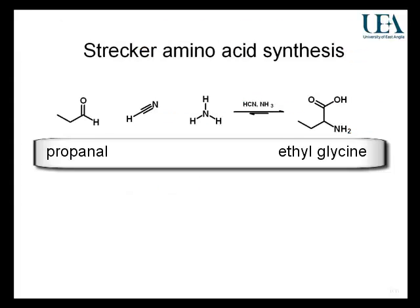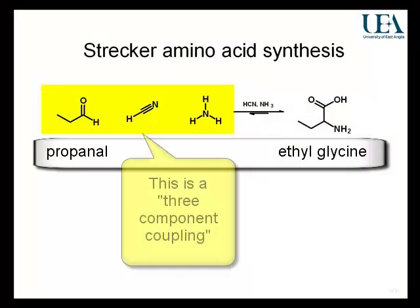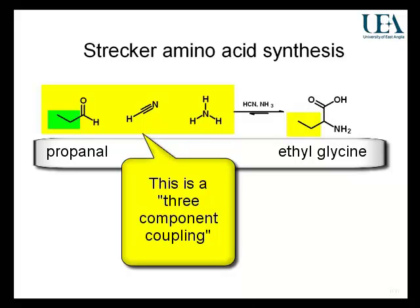This is the Strecker synthesis of amino acids. I've chosen a fairly simple amino acid. It's an amino acid because it contains an amine group and it contains a carboxylic acid group. Now let's look at the building blocks. We've got a three-component reaction. It's got an isoR group as its side chain.